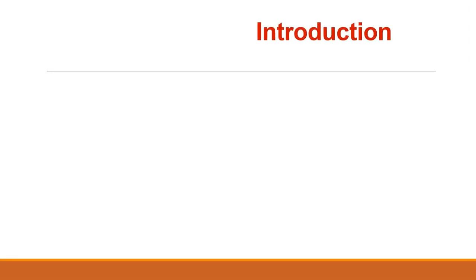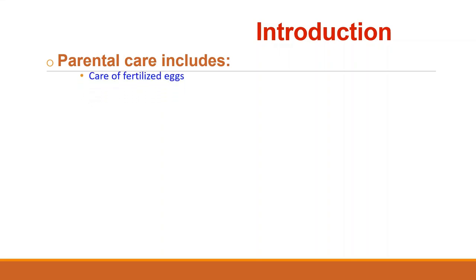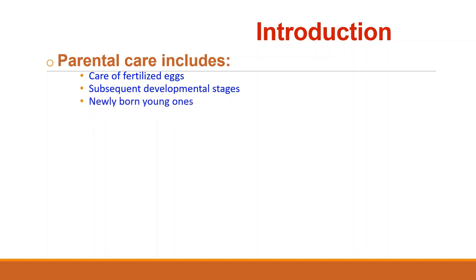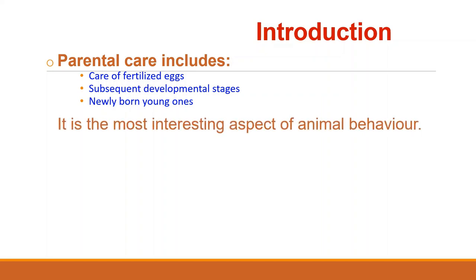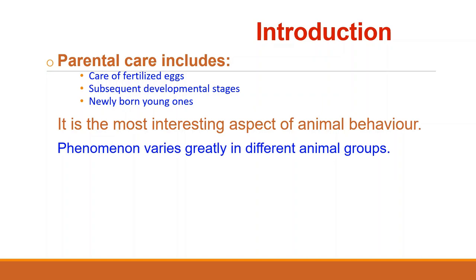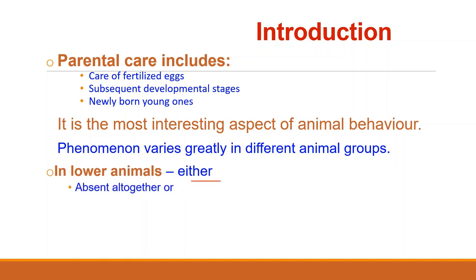Parental care essentially includes the care of fertilized eggs, its subsequent developmental stages until it is hatched, as well as the care of newly hatched or newborn young until it becomes an independent adult capable of feeding for itself. It represents the most interesting aspect of animal behavior. Lower animals, in order to perpetuate, lay large numbers of eggs and sperms which are shed to the exterior so as to ensure that at least a few eggs get fertilized and develop into adults. Thus, parental care in lower animals is either absent altogether or is restricted to only care of fertilized eggs.